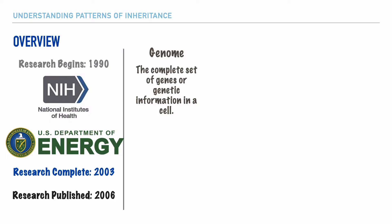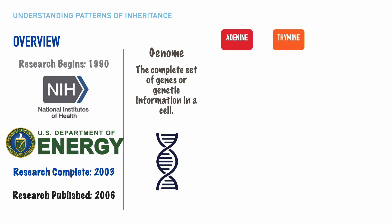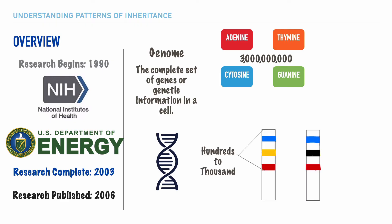DNA is a double helix structure that includes nucleotide-based pairs: adenine and thymine, which are always paired together, and cytosine and guanine, which are always paired together. Now, there are approximately 3 billion of these base pairs that reside within the 23 pairs of chromosomes that we have within the nucleus of our cells. And each chromosome contains hundreds to thousands of genes, which carry the instructions for a variety of characteristics and traits that make us who we are.